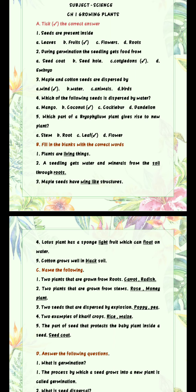So to summarize Exercise B answers: Number 1 — living. Number 2 — soil, roots. Number 3 — wing-like. Number 4 — sponge-like, float. Number 5 — black.